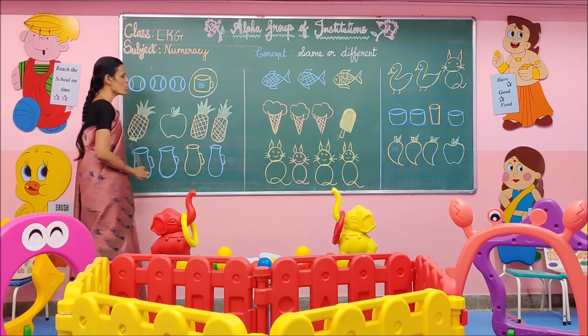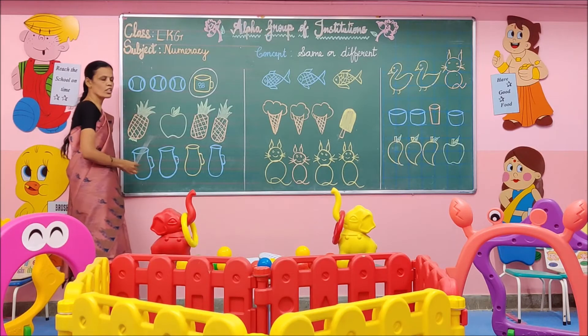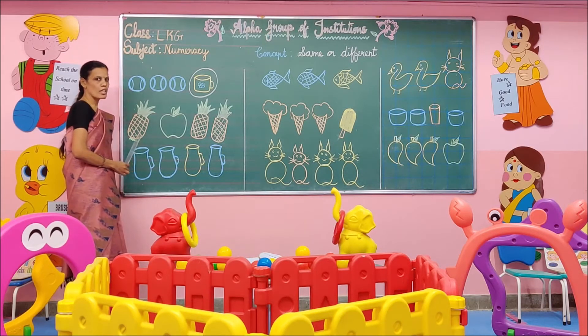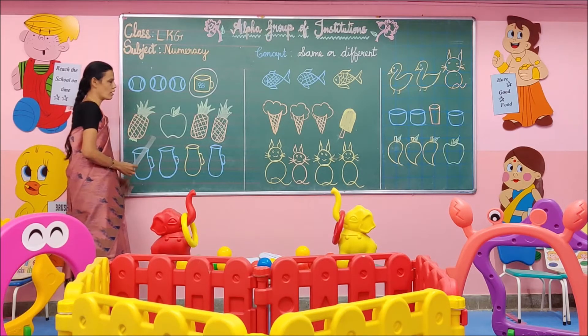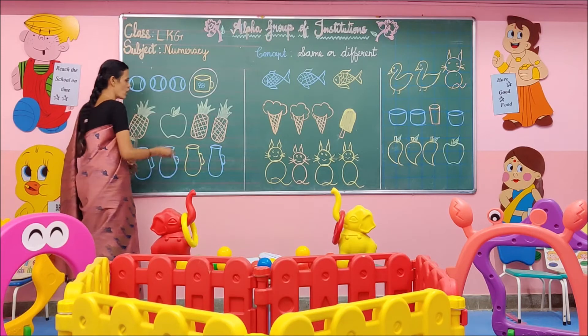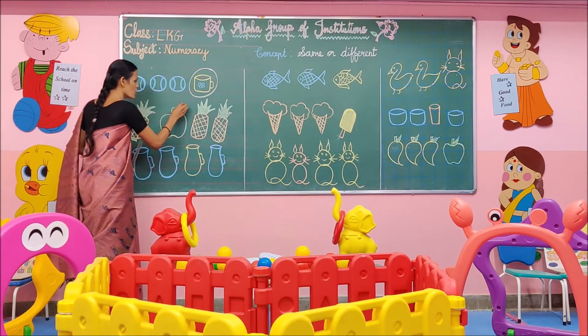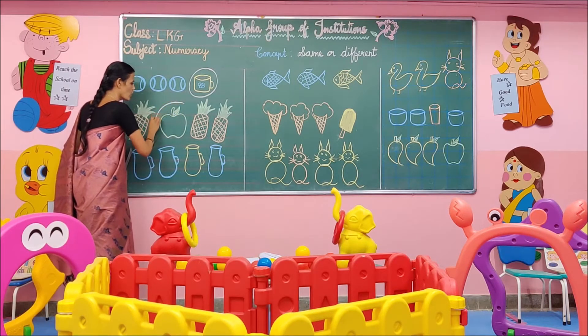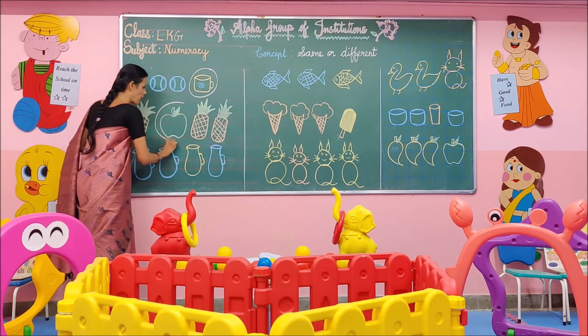Come to this group. Which one is different in this group? Apple is different. Apple does not belong to this group. So I am going to circle around that apple.